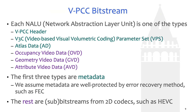Each VPCC bitstream contains a sequence of NAL units, which are essentially packets. These NAL units can be roughly classified into six types. Some of the NAL units carry metadata — these are shorter, but the metadata are more important. Therefore, we assume these NAL units are well protected by forward error correction, and we will only consider dropping NAL units from occupancy video data, geometry video data, and attribute video data in our experiments.